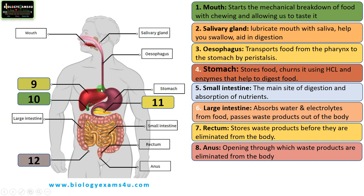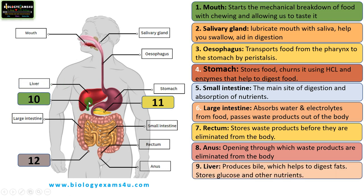Now there are accessory organs. The first one is the liver, which produces bile that is necessary for digestion and absorption of fats. It also stores glycogen and is involved in detoxification of harmful substances. The next one is the gallbladder, which stores bile that is released into the small intestine when needed, and is essential for digestion of fats.